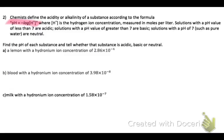For part A it says a lemon with hydronium ion concentration of 2.86 times 10 to the negative 4th. So if you look back up at the problem we know that that is just our variable H.